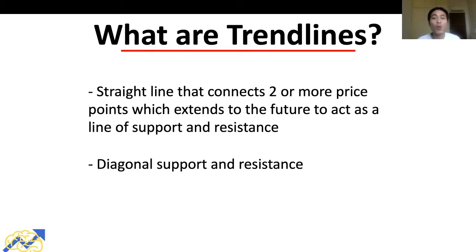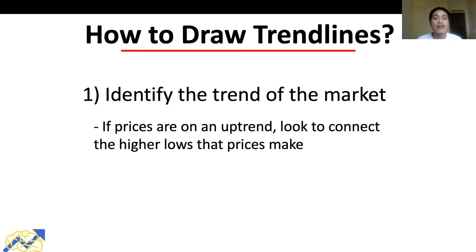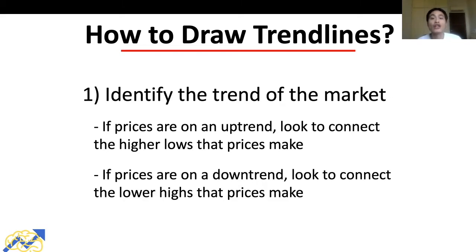Now let's dive into how to draw trend lines. The first step is to identify the trend of the market. If prices are on an uptrend, we look to connect the higher lows that prices make. If prices are on a downtrend, we look to connect the lower highs that prices make.